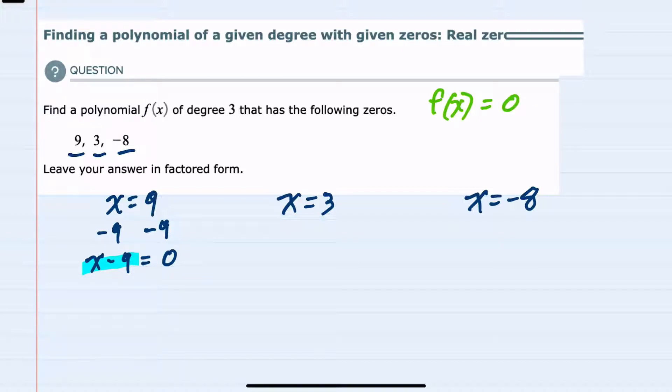If I set the second one equal to 0 moving everything to one side I will move the 3 over with the x. That leaves me an x minus 3 on the left and a 0 on the right. So here I have another factor as x minus 3.